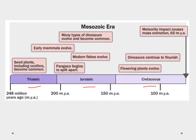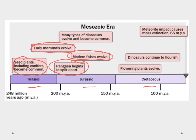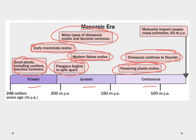Some of the highlights include seed plants — including the conifers or pine trees — becoming more common. We're seeing early mammals evolving, and modern types of fishes evolving. Pangea splits apart at the end of the Triassic, beginning of the Jurassic Period, giving us a more modern-looking landscape. Many dinosaurs evolved and flourished up until the end of the Mesozoic Era. A big one is flowering plants — the angiosperms evolved here. And finally, there's the mass extinction event 65 million years ago with the meteorite impact.